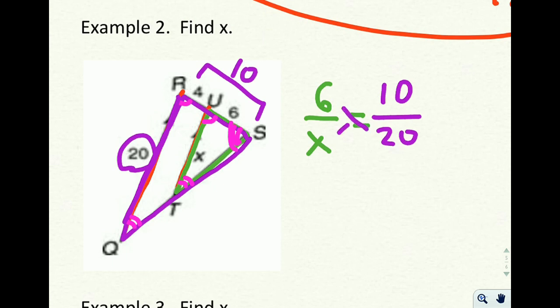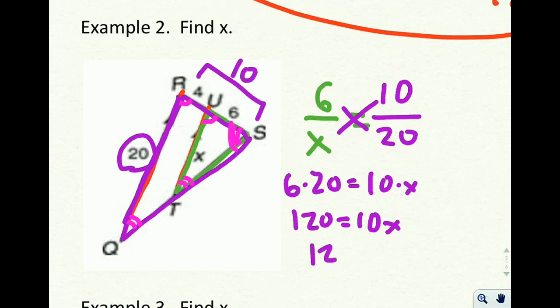Again, we're solving proportions. Cross, multiply, and divide. 6 times 20 equals 10 times x. So 120 equals 10x. And when we divide both sides by 10, we get 12 equals x. So x is 12. That seems reasonable. It's going to be a little bit less than 20. So it looks like we've got that.